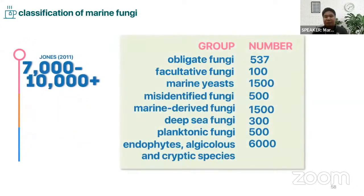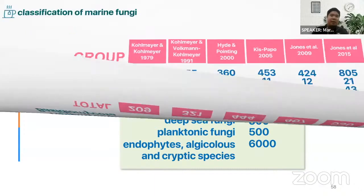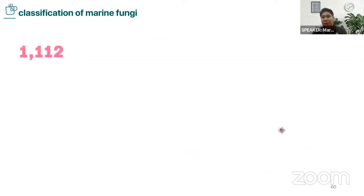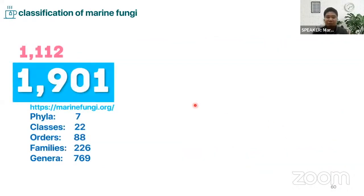From that, it's based on the number we have of marine fungi — they extrapolate the data and come up with a range of 7,000 to 10,000. Here are the data that have been listed for all the marine fungi. And from 1,112, currently in what we are doing, we have 1,901 marine fungi.